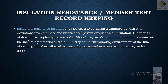The results of these types of tests, typically expressed in megaohms, depend on the temperature of the insulation material and the humidity of the surrounding environment at the time of testing. Therefore, all records must be corrected to a base temperature such as 20 degrees centigrade.